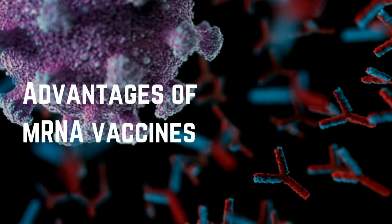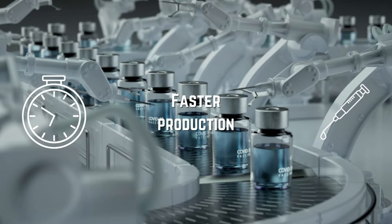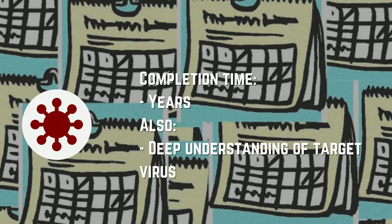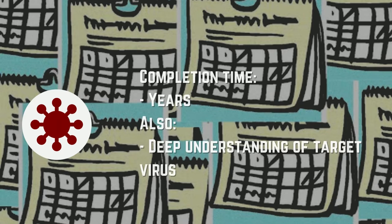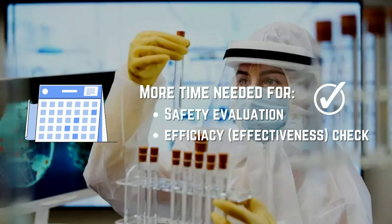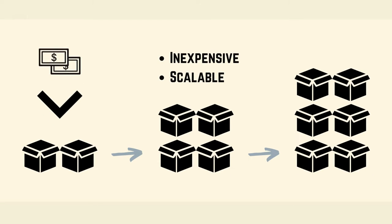mRNA vaccines have several advantages in comparison with conventional vaccines. Firstly, mRNA-based vaccines can be rapidly developed — within days or months based on sequencing information from a target virus — while conventional vaccines often take years and require a deep understanding of the target virus. Secondly, mRNA vaccines can be rapidly produced due to high yields from in vitro transcription reactions; they are quicker and more reliably manufactured than traditional vaccines, though necessary clinical trials to evaluate safety and efficacy still take longer. mRNA production can also be inexpensive and scalable.